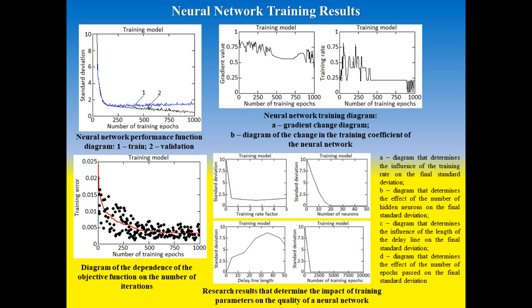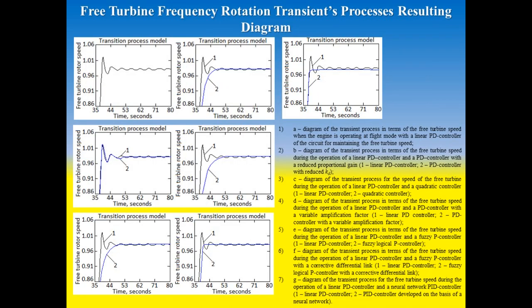The work carried out a number of additional studies that determine the influence of training parameters of the quality of the neural network, namely: influence of the training rate coefficients, influence of the number of neurons in the hidden layer, influence of the delay length of input signal, and influence of the number of training epochs passed.